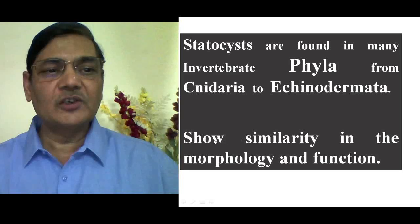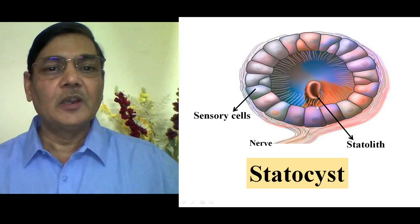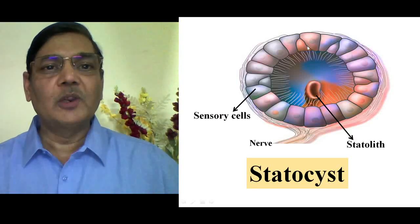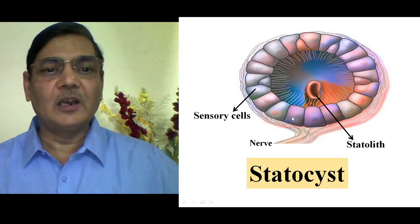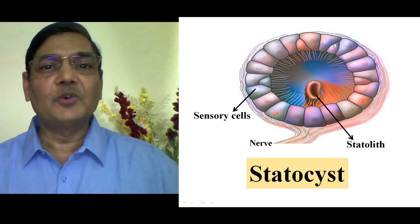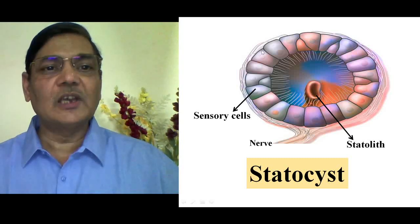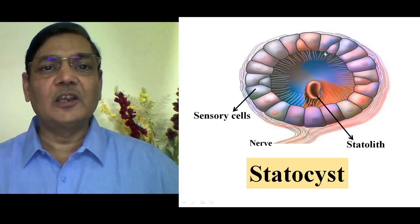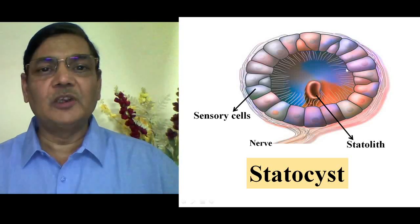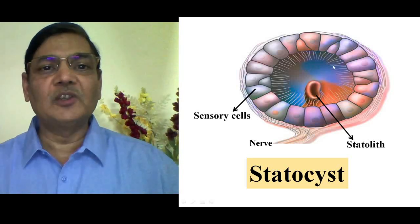These structures show similarity in their morphology as well as function. In this diagram, you can see the arrangement of cells. A single line of cells is shown, which form a circular structure. These cells are sensory cells. They possess sensory hairs in their inner margin, and these hairs are actually directed into a central matrix, which is filled with a thin fluid.